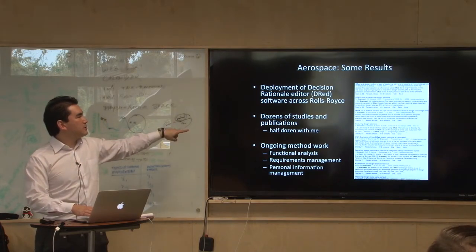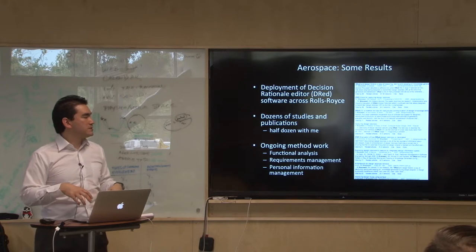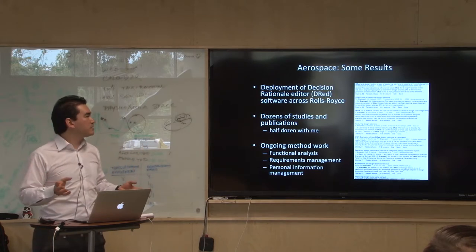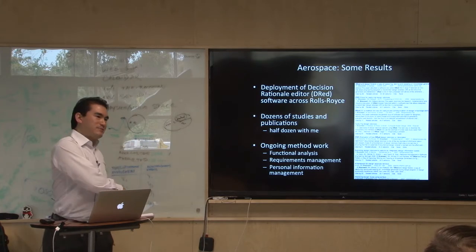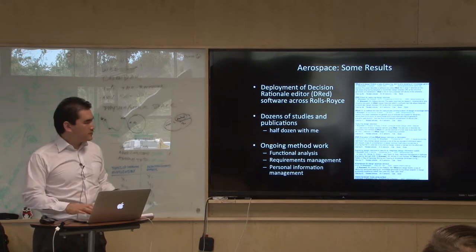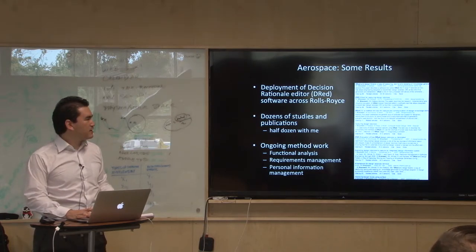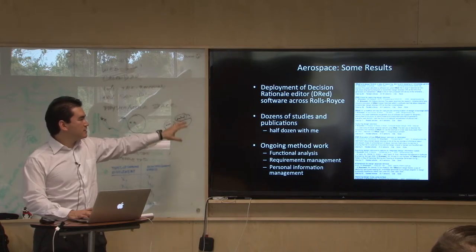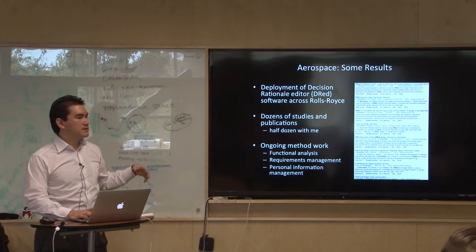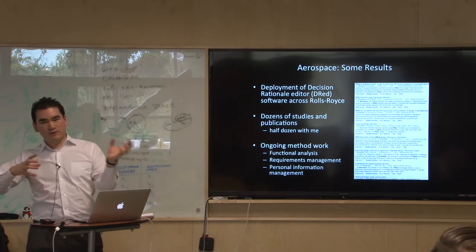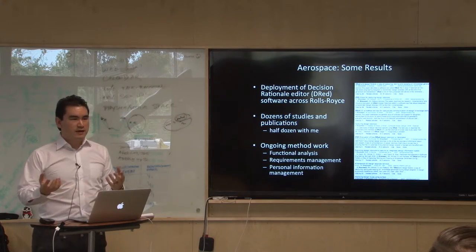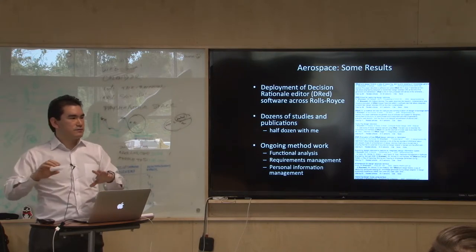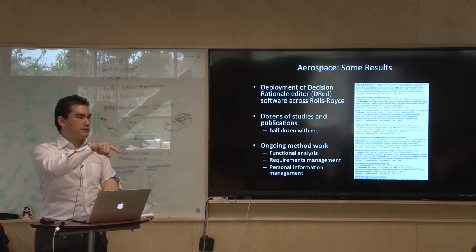What's interesting about this case is that particular tool, called the Decision Rationale Editor, was accepted enough by our partner Rolls-Royce that it became a standard part of the engineering toolkit on all engineering workstations across the company. So if those documents come up in a meeting, basically everyone can open it. The research has had an effect on design practice. Academically, dozens of studies have been produced. And they're convinced enough by this proof of concept that there's ongoing method work using different symbol sets for functional analysis, requirements management — that problem of ramming all ideas into the database — and personal information management. This tool is simple enough that some engineers actively use it just to track what they're doing every day and how that evolves.